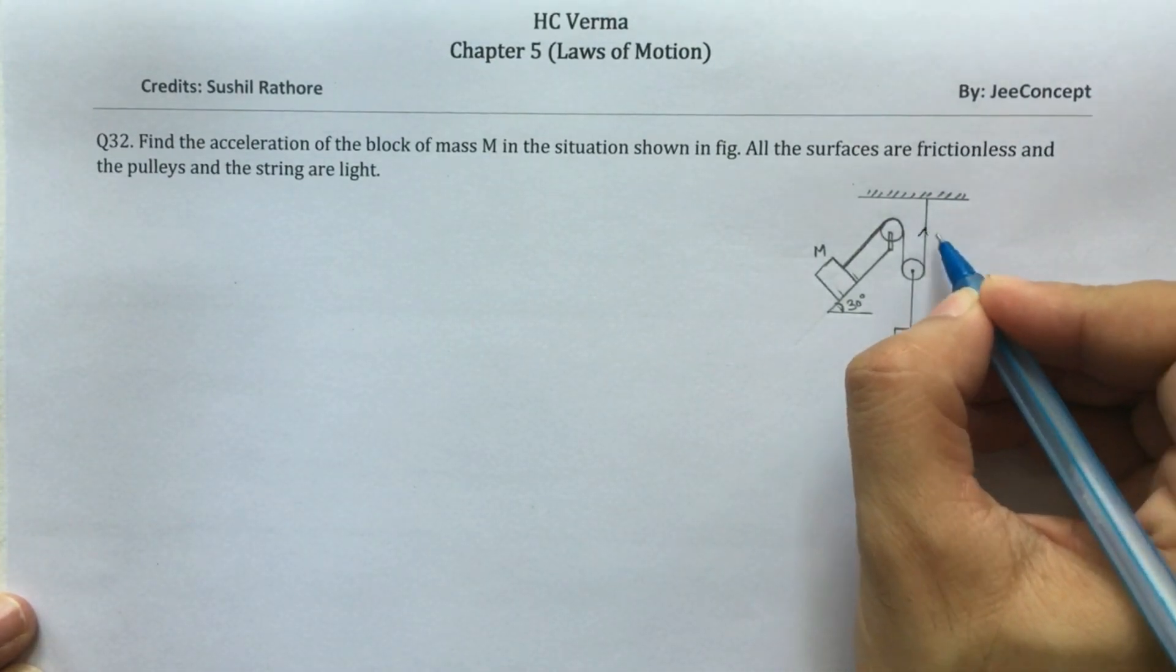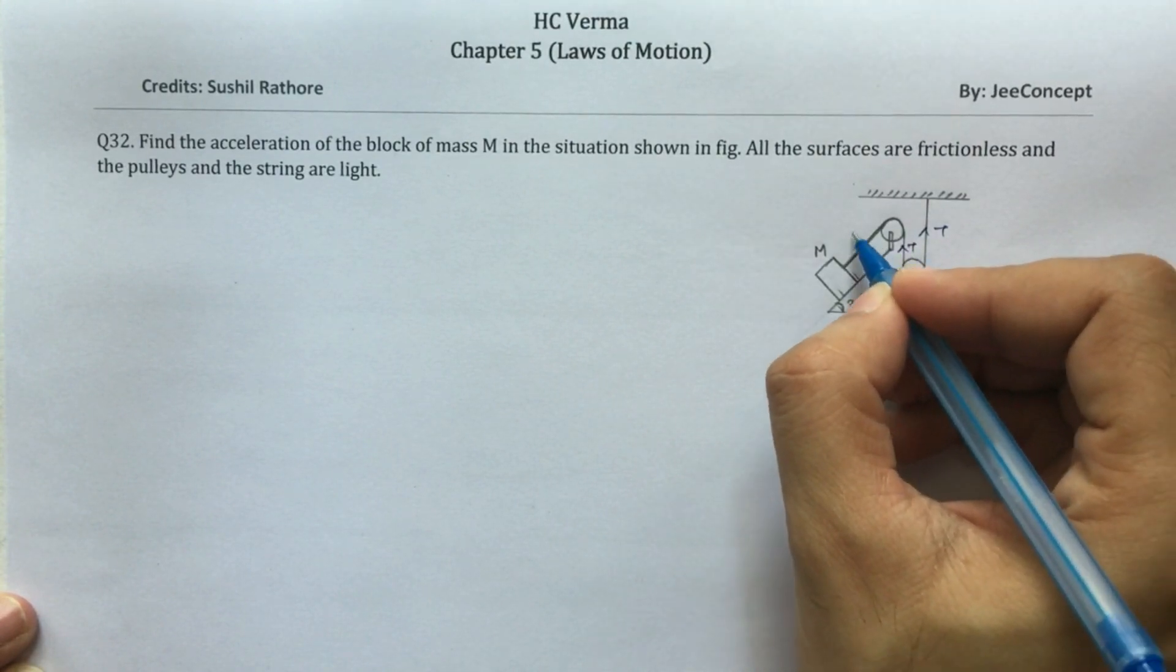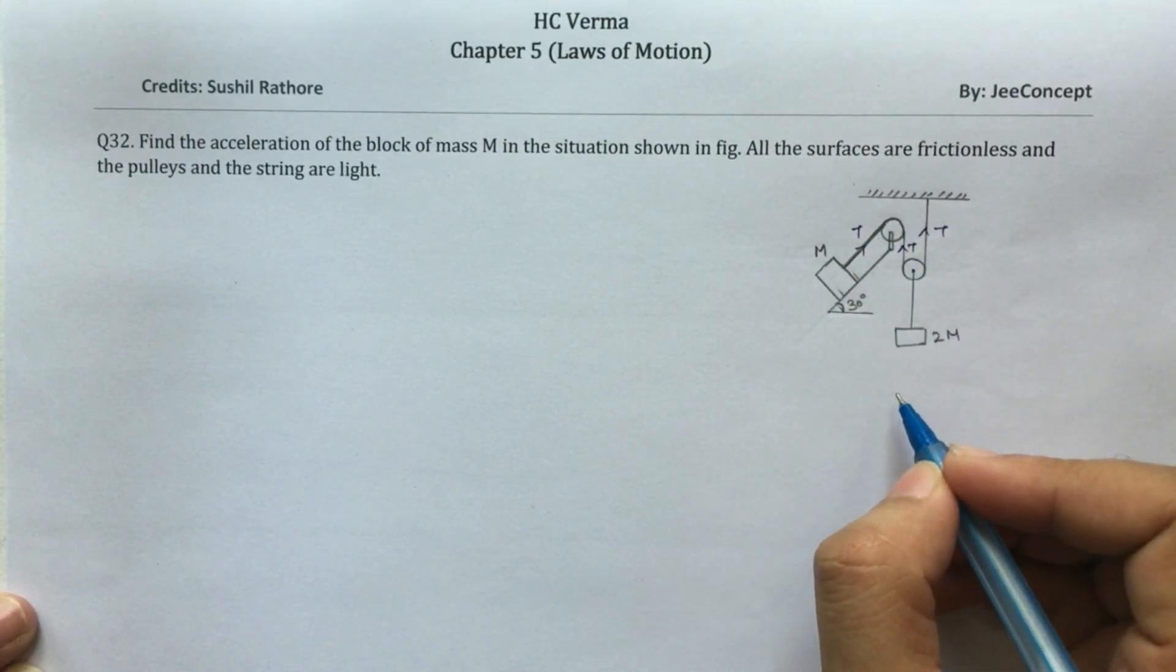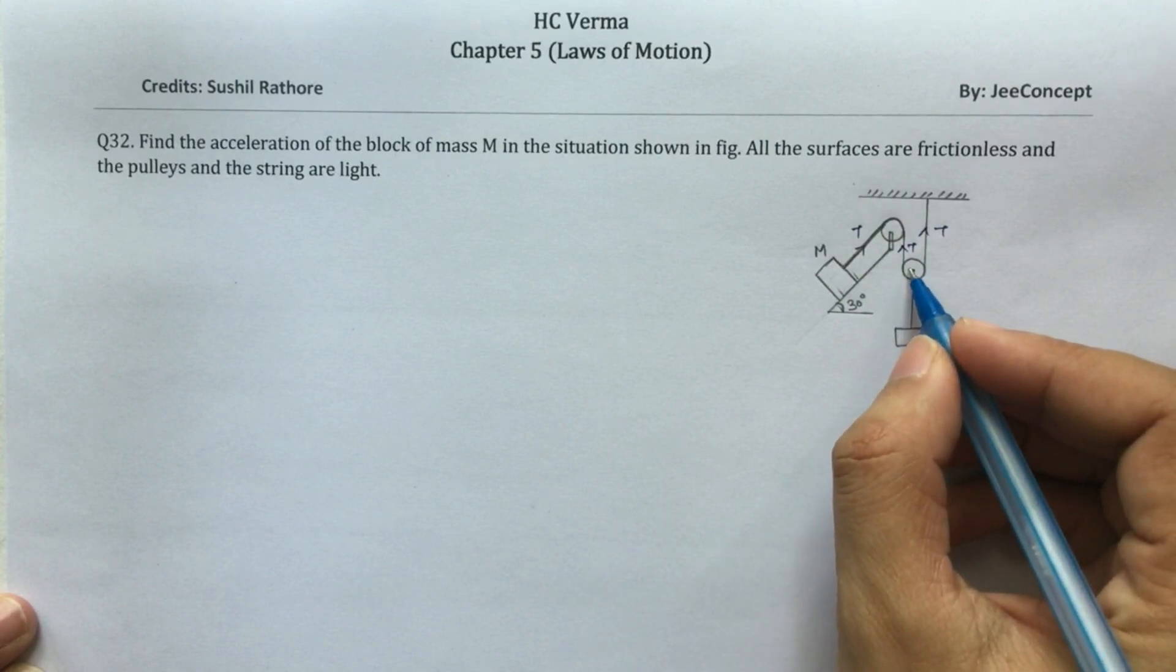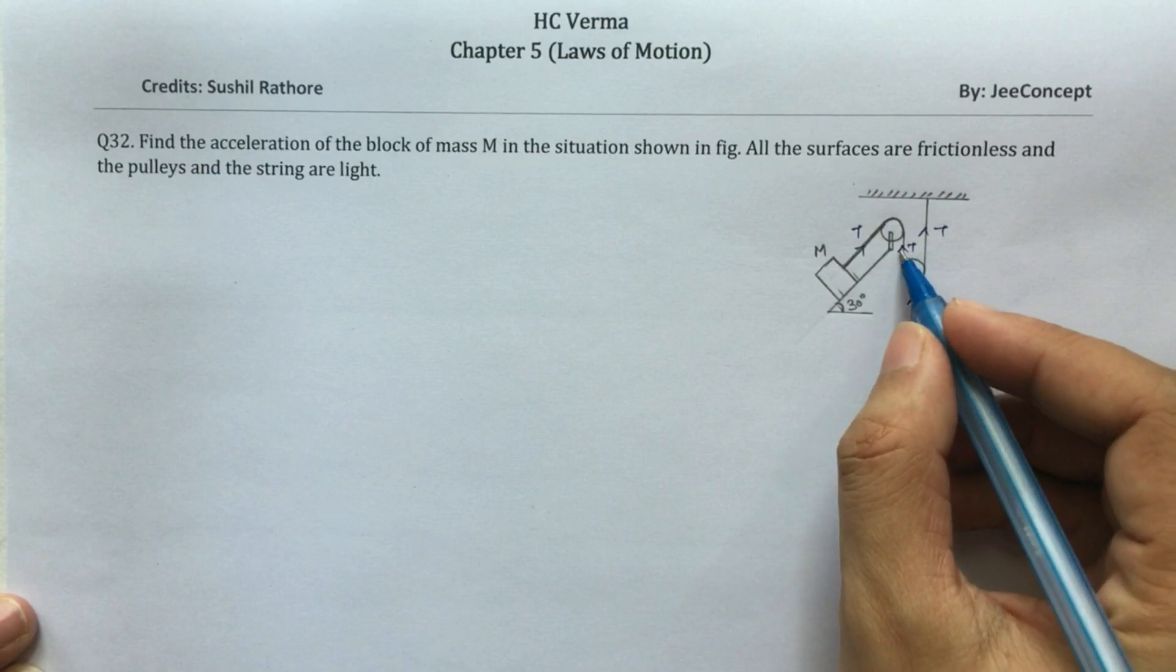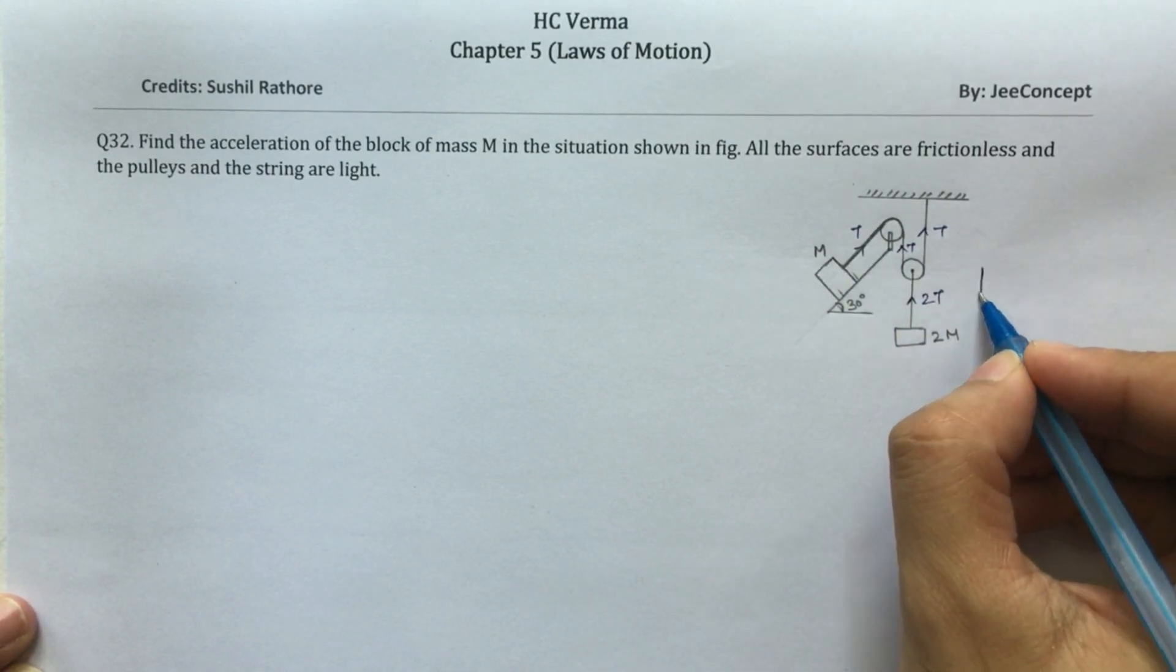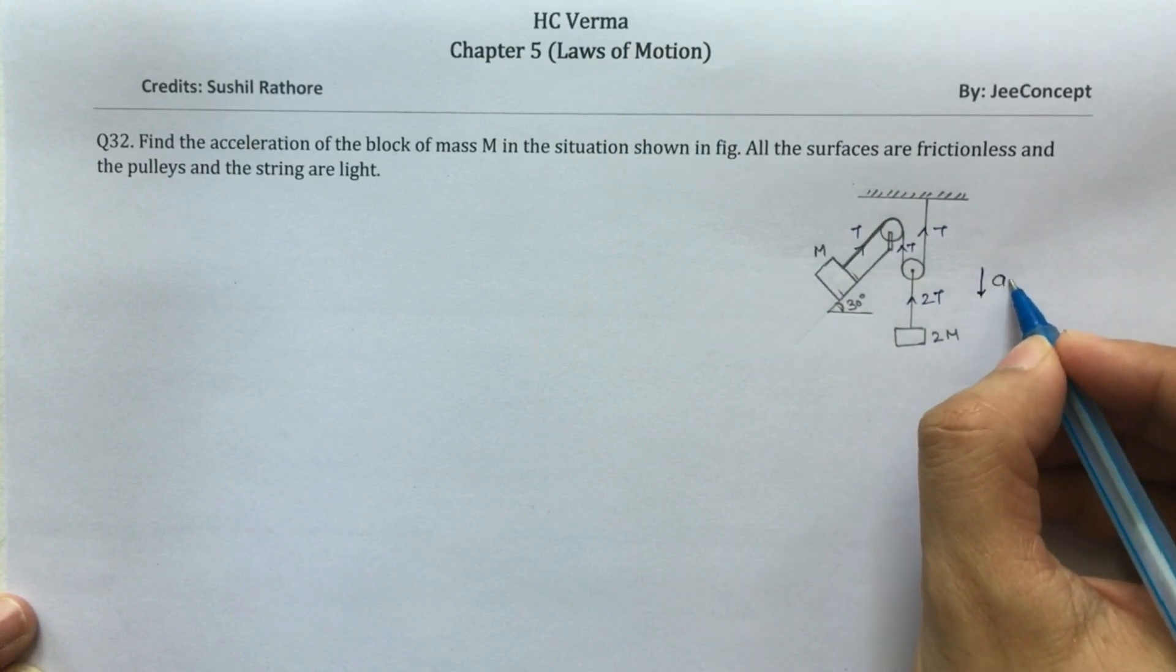So first of all we have to define the tension in the strings. This is T, this is T, and this is T. The tension in this string is going to be T plus T, that means 2T.